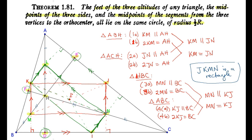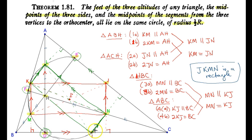That concludes our proof that all nine points are concyclic — they all lie on the same circle. This circle is called the nine-point circle, and it has many very interesting properties.